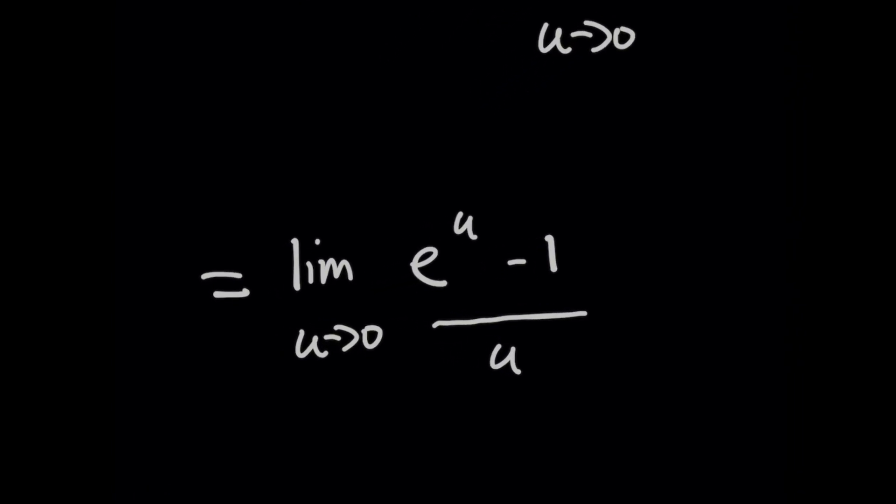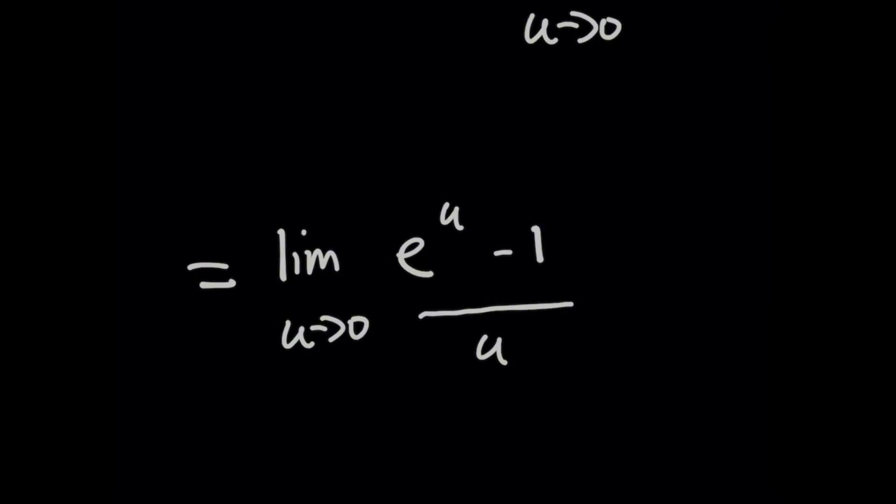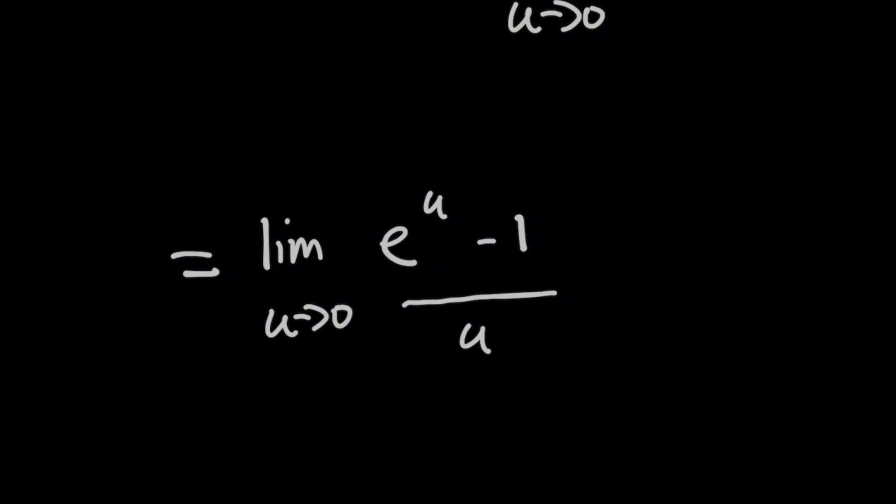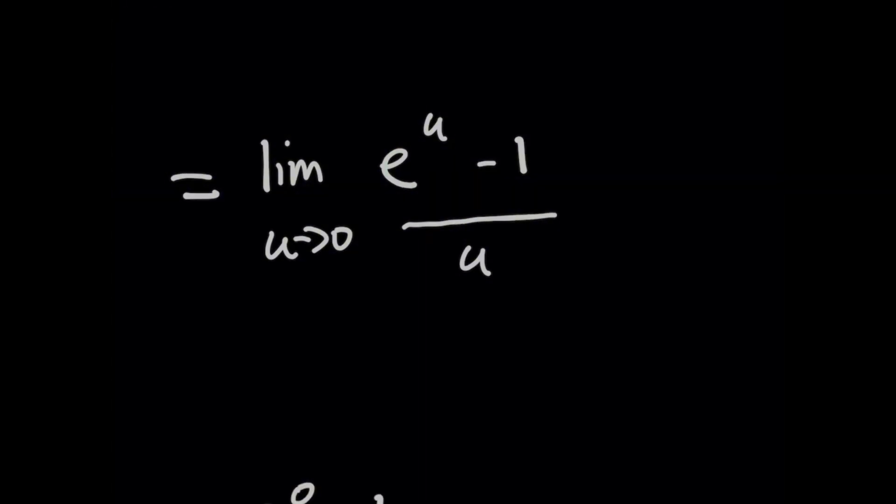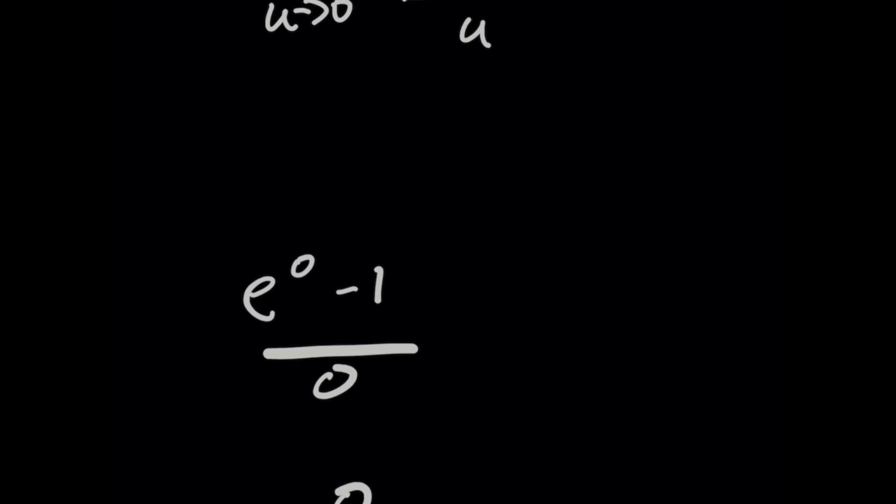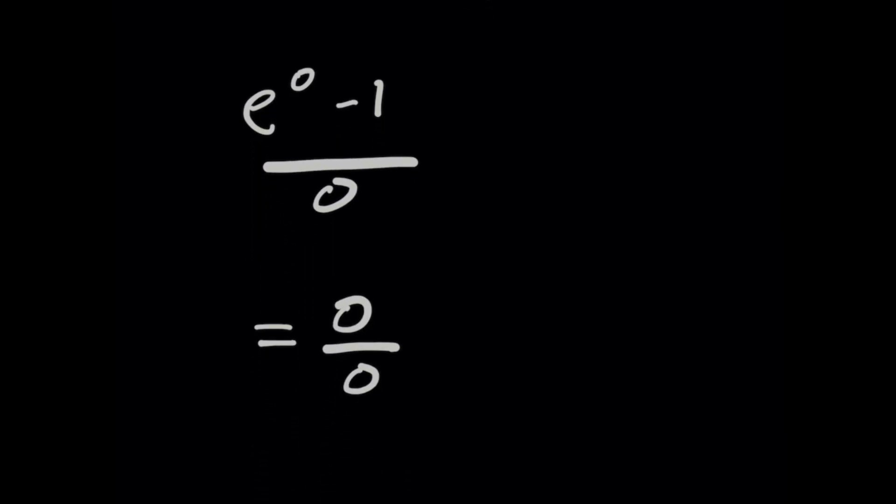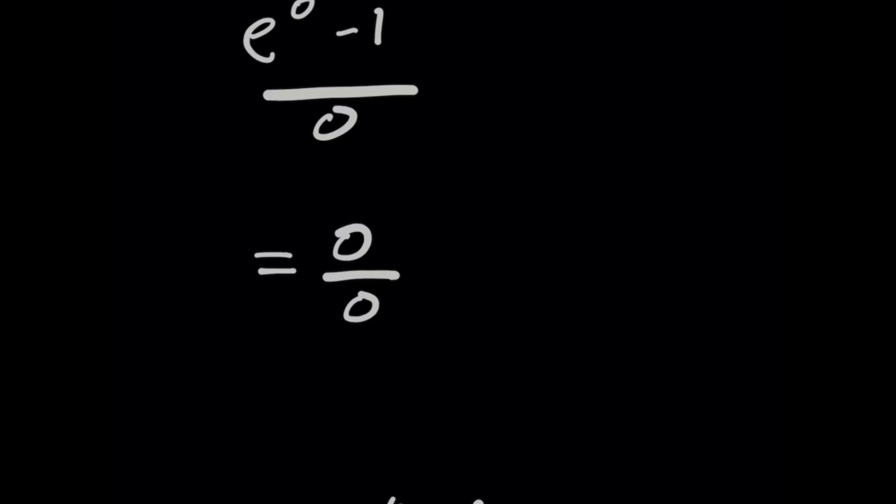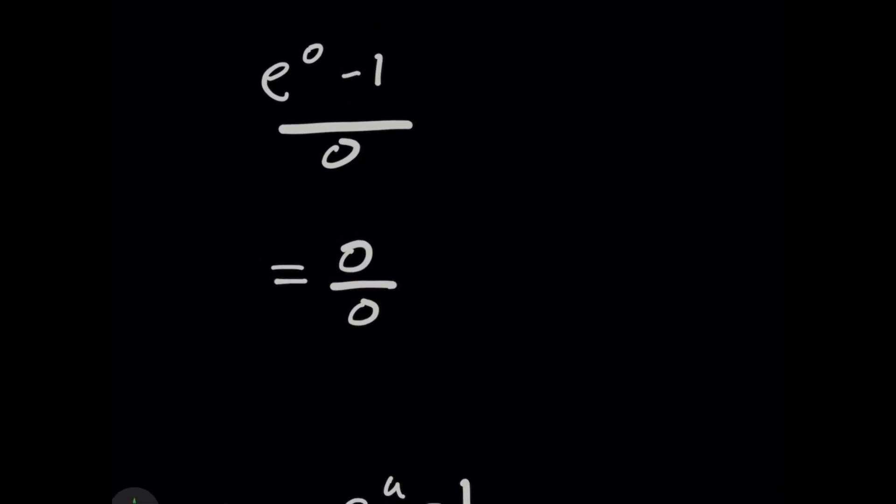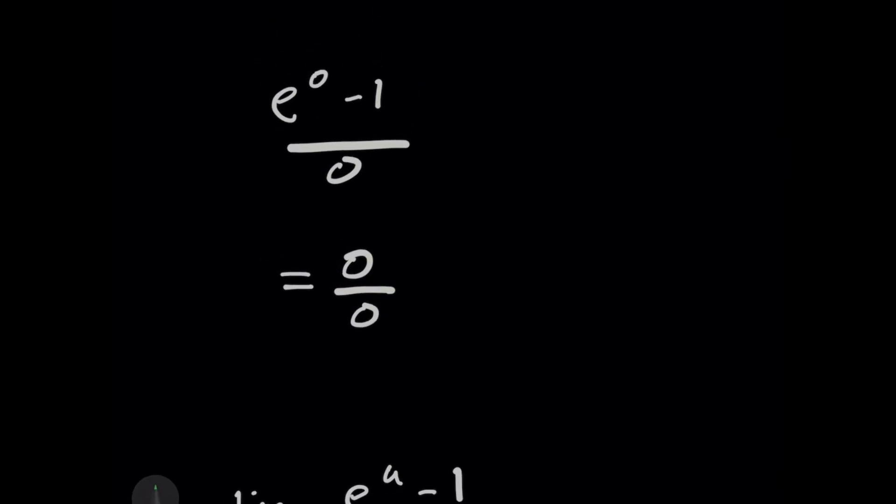So then when we rewrite this problem as a new transformed limit, you've now got the limit as u approaches zero of e to the u minus one all over u. And you might be scratching your head saying, hey Dave, if you plug in zero for u here, you're going to have an indeterminate form. So why didn't you just start with L'Hopital's rule from the very beginning? And you're absolutely correct, because when we plug in zero here for u, we're going to get e to the zero minus one all over zero, and this is yes an indeterminate form.